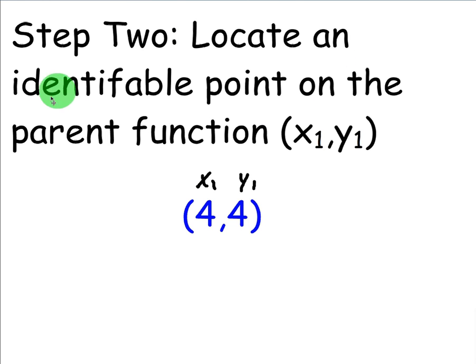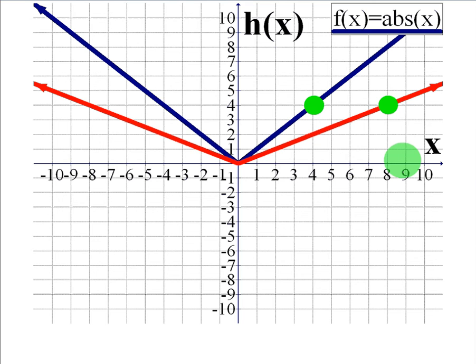Step 2, locate an identifiable point on the parent function. This one won't really matter. Here, I chose 4 comma 4. Actually, you can't choose 0 comma 0, can you, because it remains the same. So, you have to go with something else, something that touches the grid. So, for my parent function, I'm going to choose 4 comma 4.